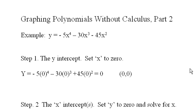Graphing polynomials without calculus, part two. So we have an example here of a quartic: negative 5x to the fourth minus 30x cubed minus 45x squared.